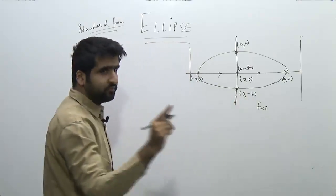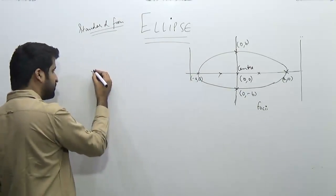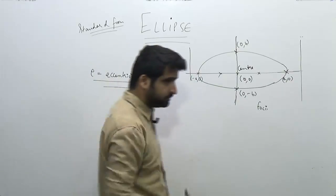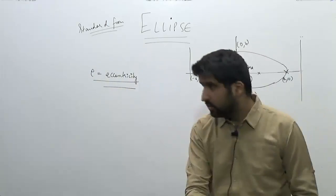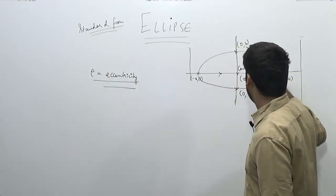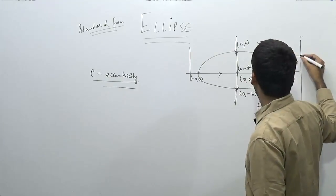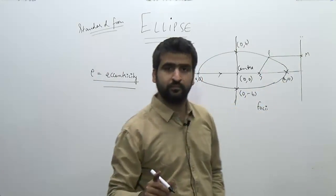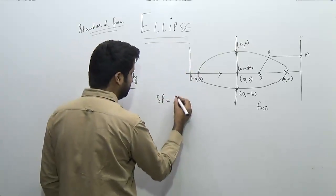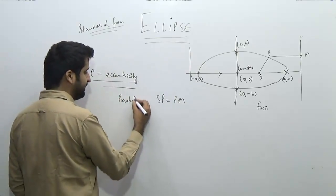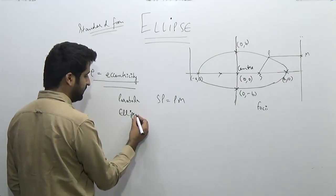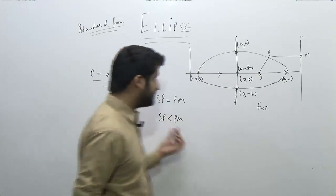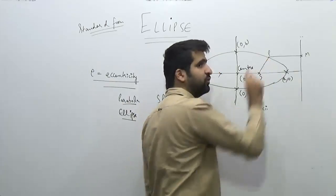A new term comes here which is called eccentricity, denoted by E. Now let's discuss the definition of eccentricity — this is very important. If SP is the distance from the focus and PM is the distance from the directrix, in the case of a parabola SP equals PM. But in the case of an ellipse, SP is always smaller than PM — meaning the distance from the focus is always smaller than the distance from the directrix.